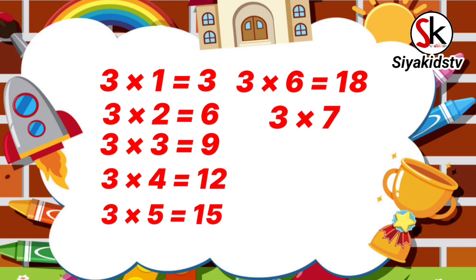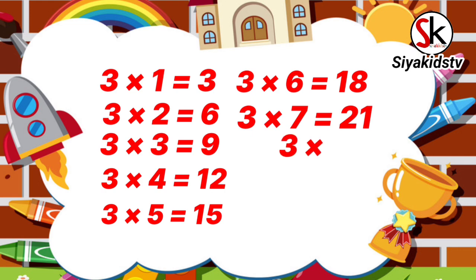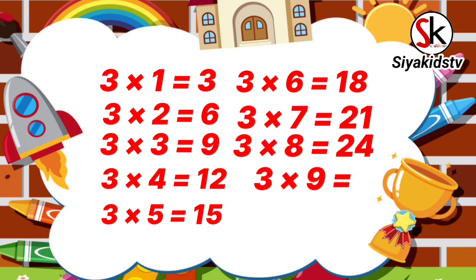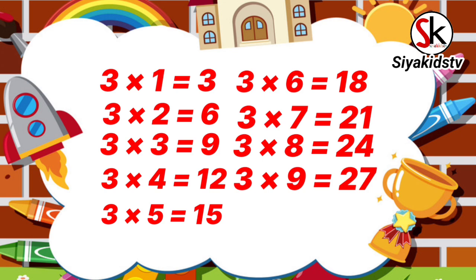3 times 6 is 18, 3 times 7 is 21, 3 times 8 is 24, 3 times 9 is 27, 3 times 10 is 30.